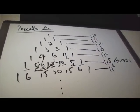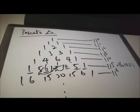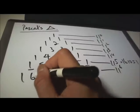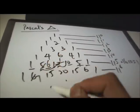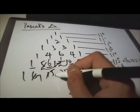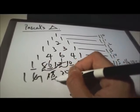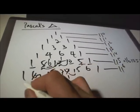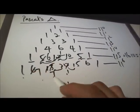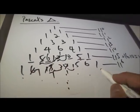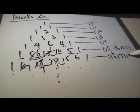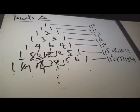So 161051 is 11 power 5. How about 11 power 6? You carry over the tens: 1 carry over makes 7, cancel this, the carry over becomes 7, and this carry over becomes 1. So 11 power 6 is 1771561.